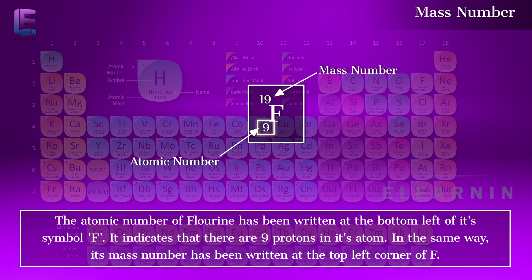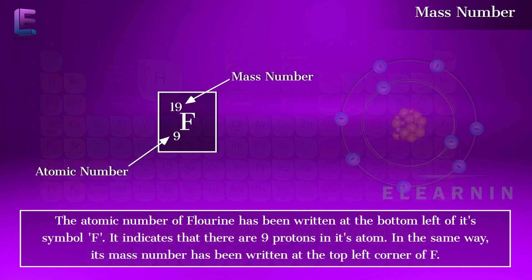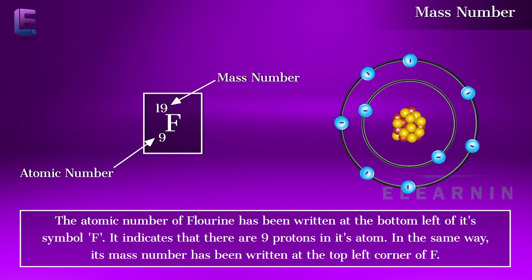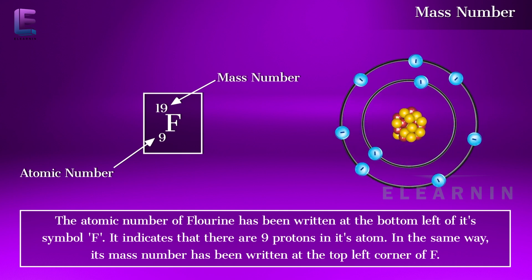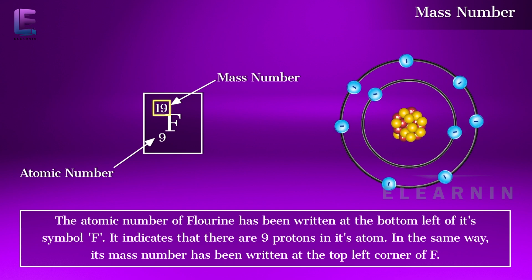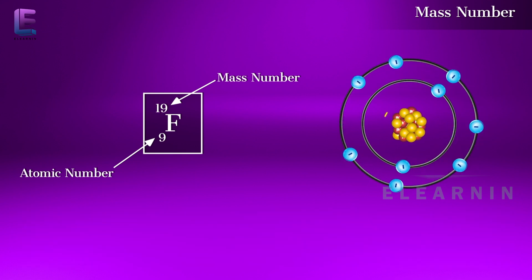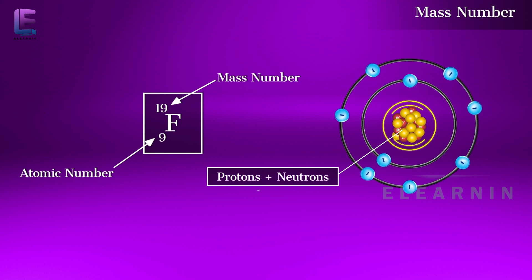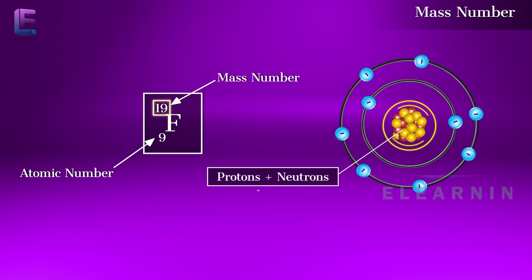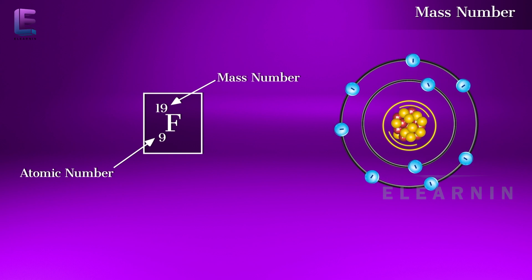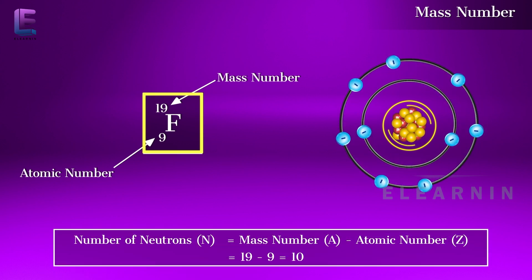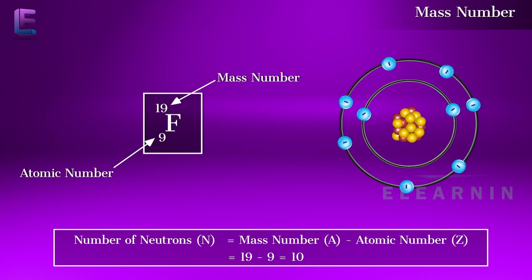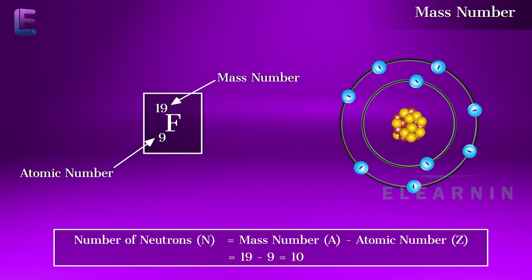The atomic number of fluorine has been written at the bottom left of its symbol F, indicating there are nine protons in its atom. Its mass number has been written at the top left corner of F, showing that fluorine's nucleons — protons and neutrons — number 19 in total. Therefore, the number of neutrons in fluorine is 19 minus 9, equal to 10, because N equals A minus Z.